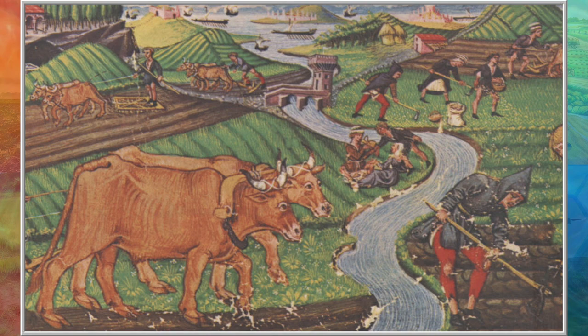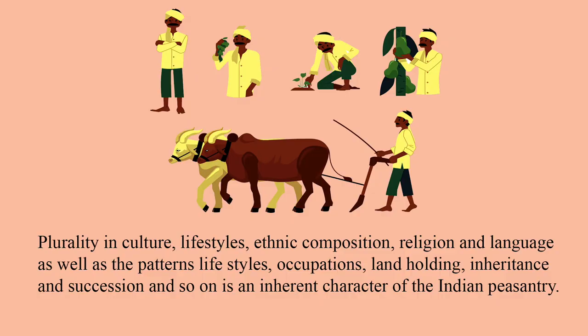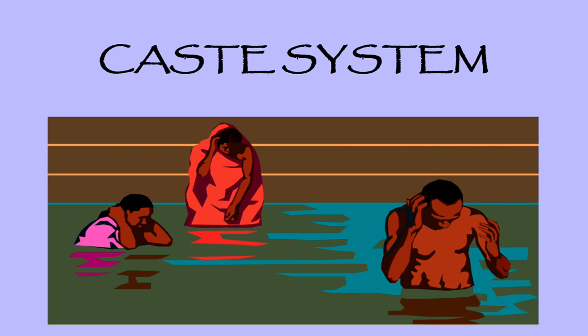Like any other society, Indian agrarian society was in a flux. Indian peasantry was a homogeneous category and the Indian village was a republic as well as a self-sufficient unit at the time of the British period. But plurality in culture, lifestyles, ethnic composition, religion and language, as well as patterns of occupations, landholding, inheritance and succession, is an inherent character of Indian peasantry. Indian society had been a stratified society, and caste and the jajmani system played an important role in it.